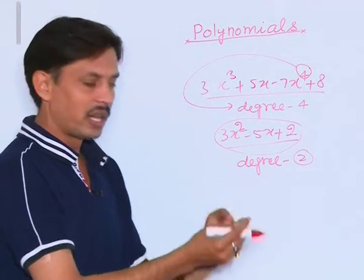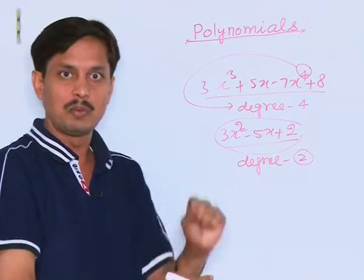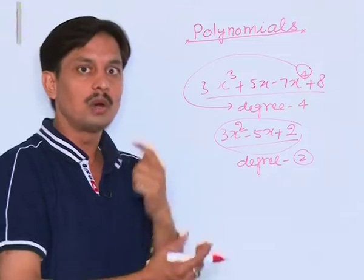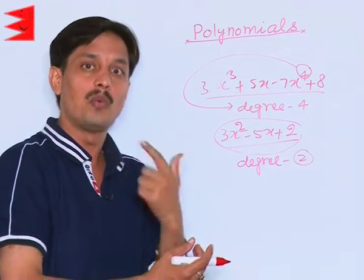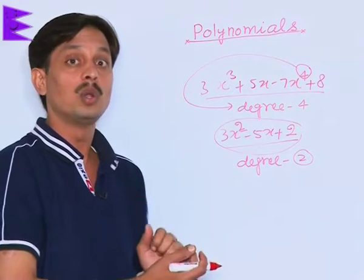So the highest power in any polynomial is responsible for its degree and for number of zeros. That is, the number of values of the variable which can put it equal to 0.